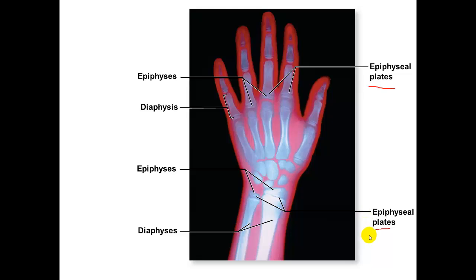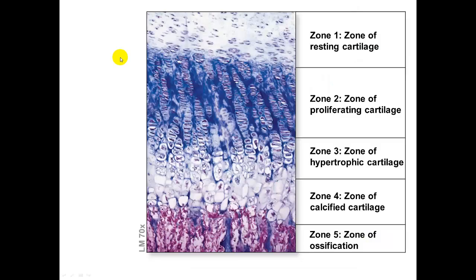Here is a figure showing the cartilage in the epiphyseal plates. There are five different zones within the epiphyseal plate. Zone 1 is the zone of resting cartilage, nearest to the epiphyseal plate. It is composed of small chondrocytes distributed throughout the matrix. It resembles hyaline cartilage and helps secure the epiphysis to the epiphyseal plate.